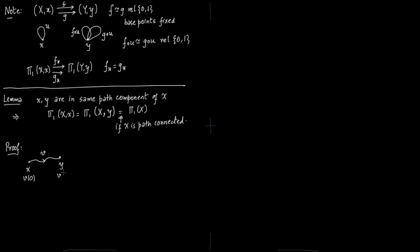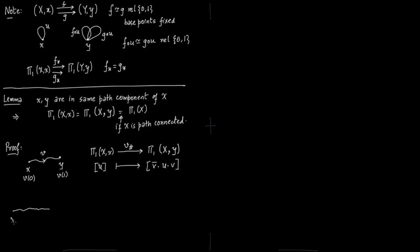Say you have a path v which connects the two points x and y, since both lie in the same path component. We define a map from π₁(x, x) to π₁(x, y). You carry the path u by putting v̄ in front of it and v behind it, where v̄ means the path opposite to v. So you have a path from x to y given by v, and a loop based at x.